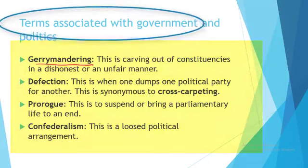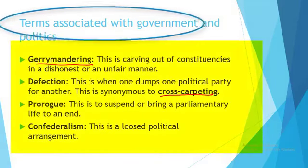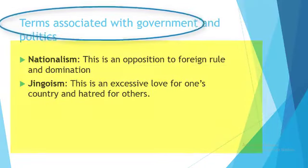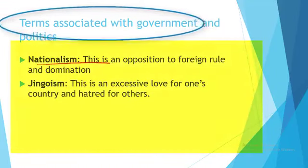Then defection — another word for defection is cross-carpeting. When you leave one political party for another, we say you have defected or cross-carpeted. And lastly, we have nationalism — nationalism is simply your love and loyalty for your country, such that you are able to die for your country.